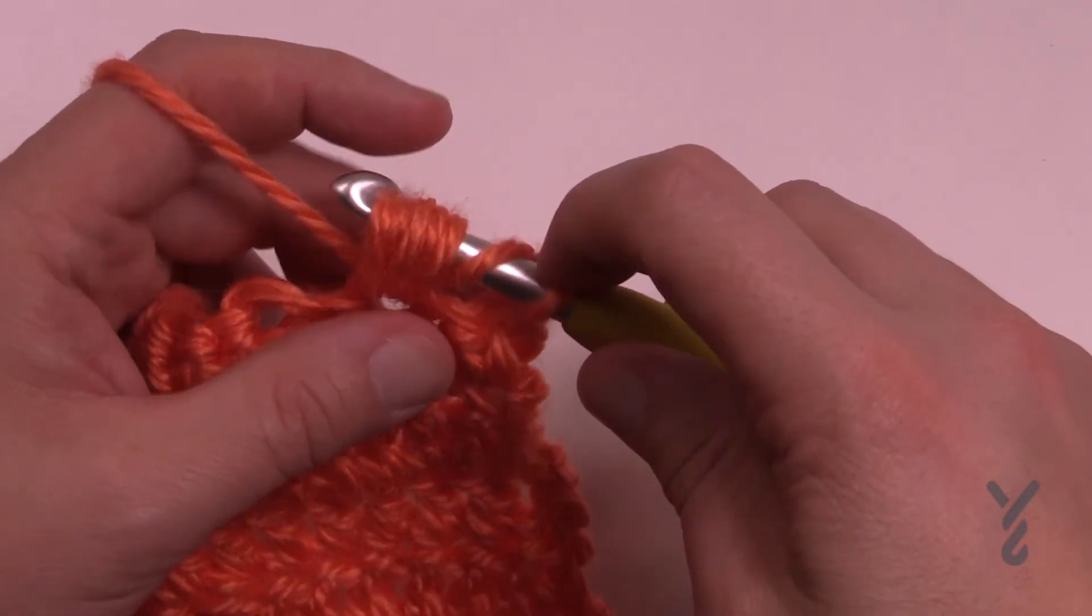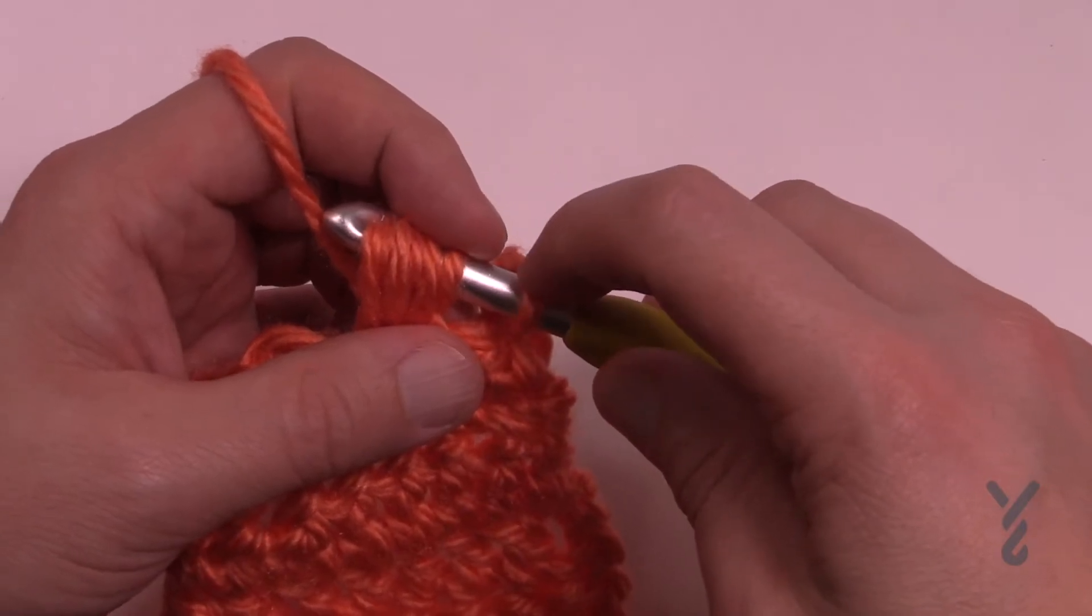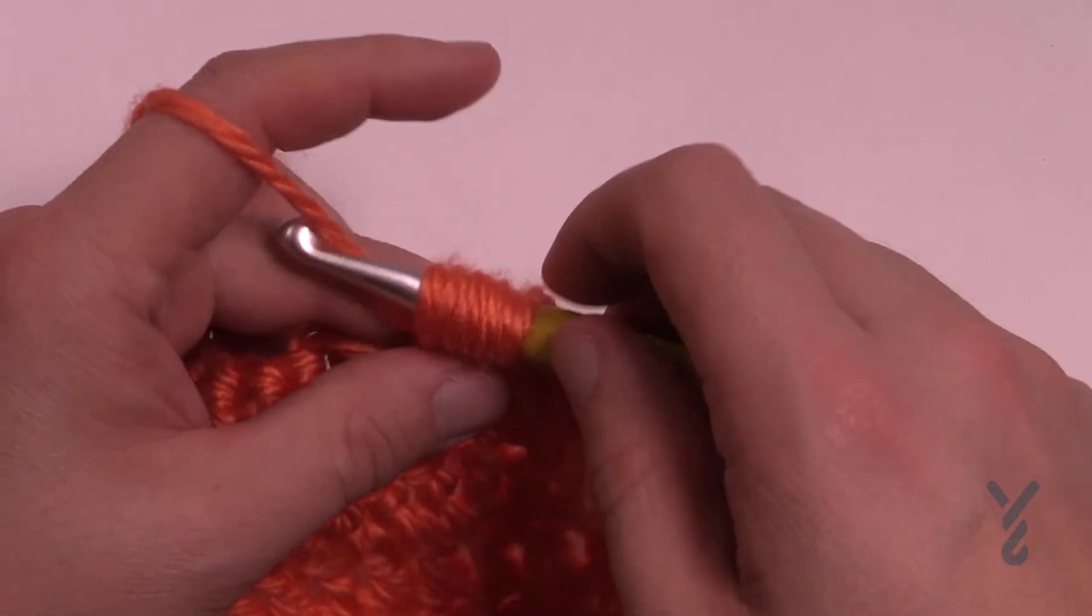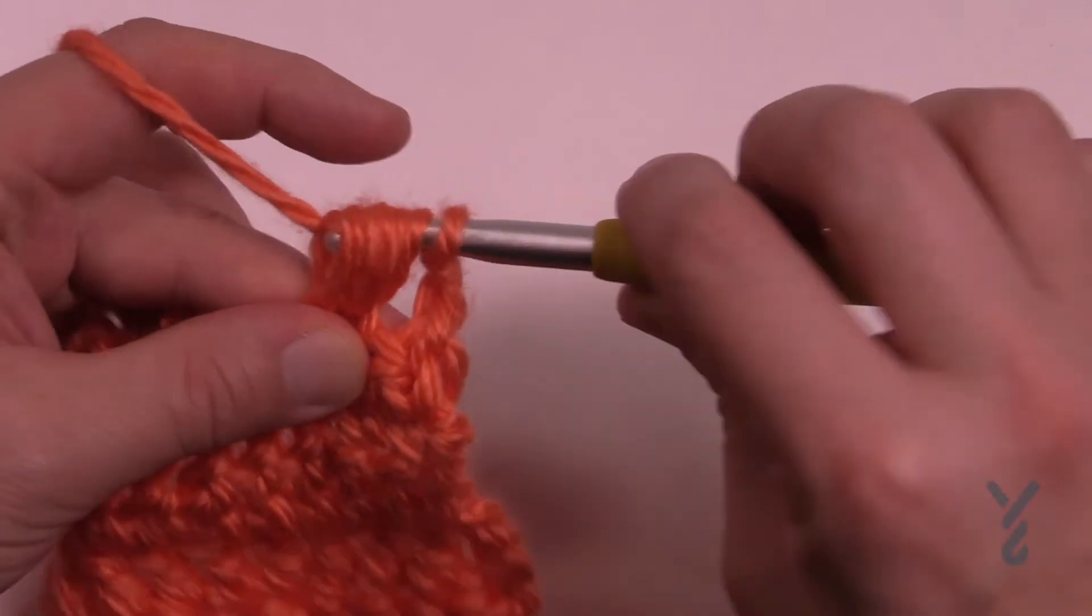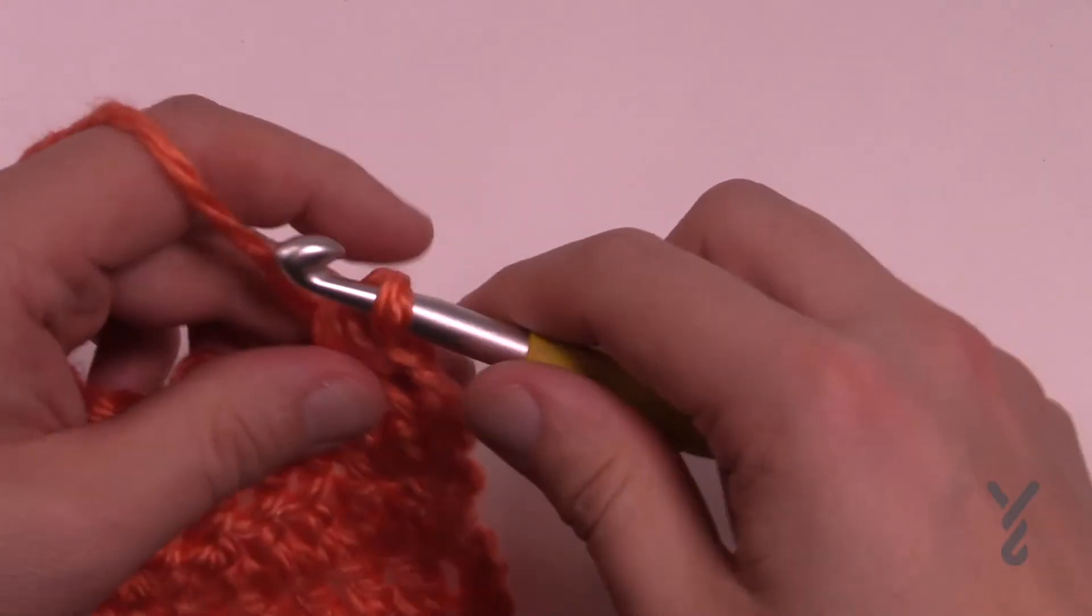Now if this was the puff stitch you would wrap and pull just through the front section and then wrap again and pull through the final, but this is a cluster so you're gonna pull through everything. So just yarn over and wiggle its way over to the other side in order to finish this stitch.